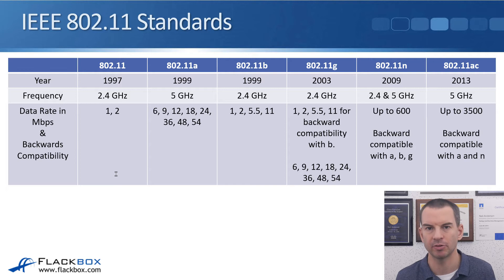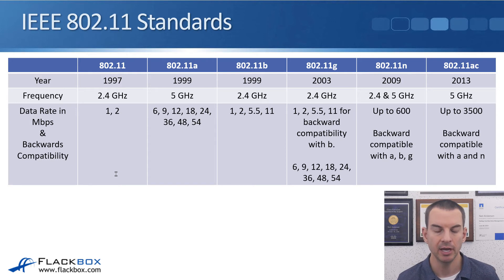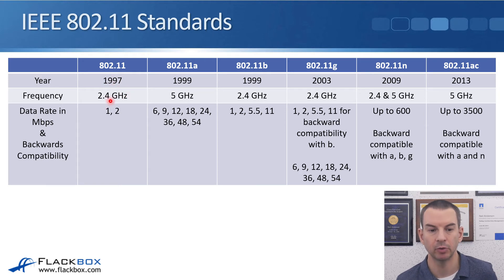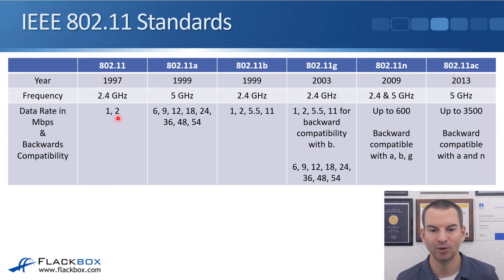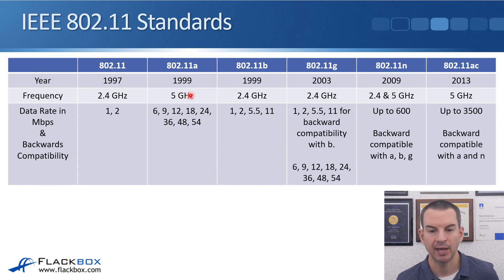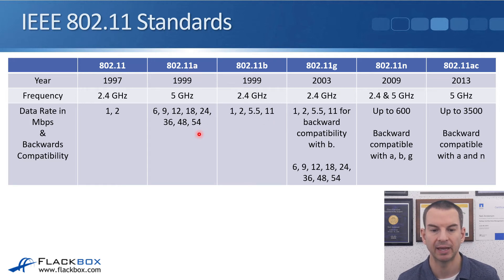Before we talk about radio frequencies more, let's talk about the standards and how they've evolved over time. The standard for Wi-Fi communications is IEEE 802.11, which first came out in 1997 and operated in the 2.4 GHz range with a maximum bandwidth of 2 Mbps — pretty slow. In 1999, 802.11a and 802.11b both came out. 802.11b operates at 2.4 GHz with a maximum of 11 Mbps, while 802.11a is 5 GHz with 54 Mbps.